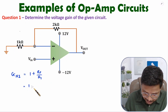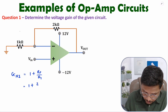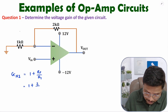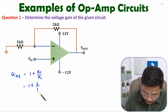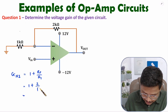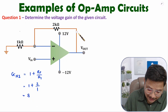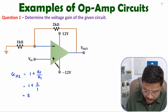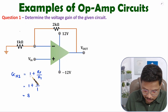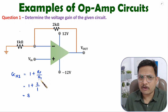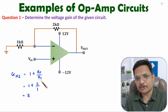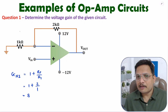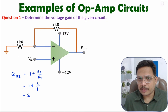Gain for non-inverting configuration is 1 plus RF by R1 for negative feedback — this is what I have already derived. Here RF is 2 kilo ohm and R1 is 1 kilo ohm. So gain is 1 plus 2, that is 3. With non-inverting configuration and negative feedback, gain is 1 plus RF by R1. That is simply how one can solve this. Let us move on to the second question.